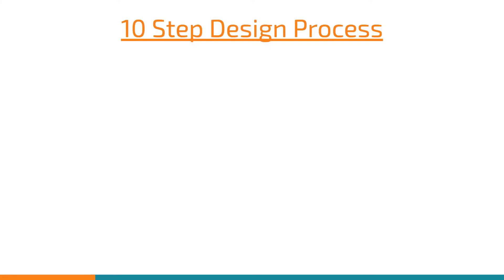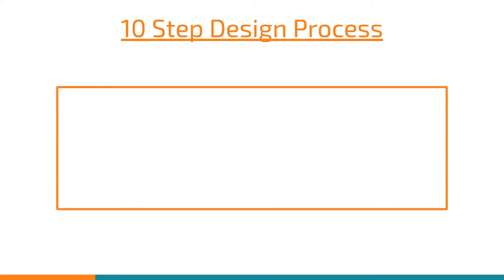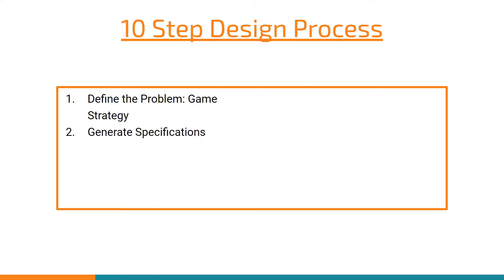When solving any task in engineering, there are 10 steps used not only on our team, but through all of engineering. The first step is to identify the problem — for us, that's our game strategy: what is it that we want to do? Then we generate specifications: what is everything that a robot can do? And then we decide what's most important — what do we need to do, what do we hope to do, and what would be nice to do if we have time?